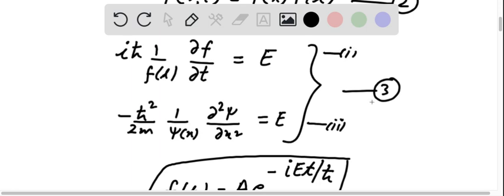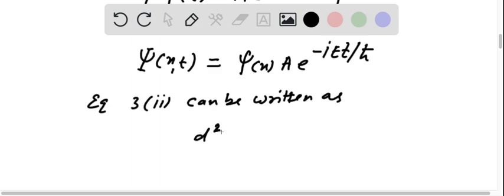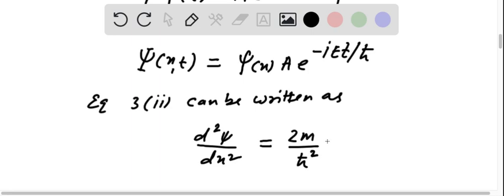The time-independent Schrödinger equation can be rewritten as: d²ψ/dx² = (2m/ℏ²)(V(x) − E)ψ, where V is the potential energy as a function of position only, and ψ is a function of x.